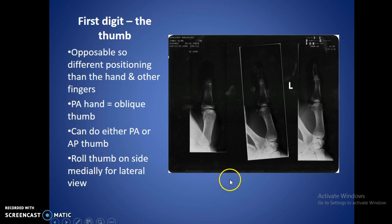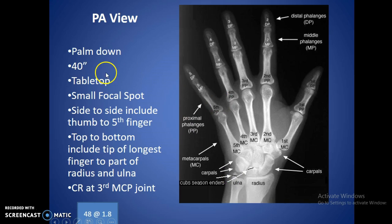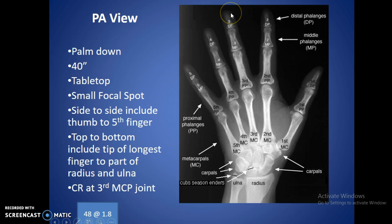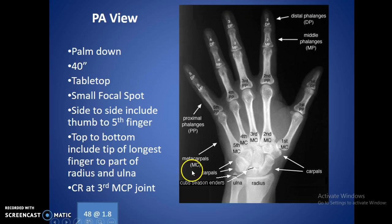For the PA view, it's going to be palm down at 40 inches using a tabletop setting — you put the hand right on top of the cassette. We're going to use a small focal spot to get as much fine detail as possible when looking for small fractures or bone chips. Include from side to side: thumb to the very tip of the fifth finger. Top to bottom, include the longest finger (usually the third finger) and get about an inch and a half of the radius and ulna. The centering point, according to the book, is going to be the third MCP joint. It may change from patient to patient depending on swelling or if they're missing a digit. Generally, if you just frame your images for extremities, you'll usually get everything on.